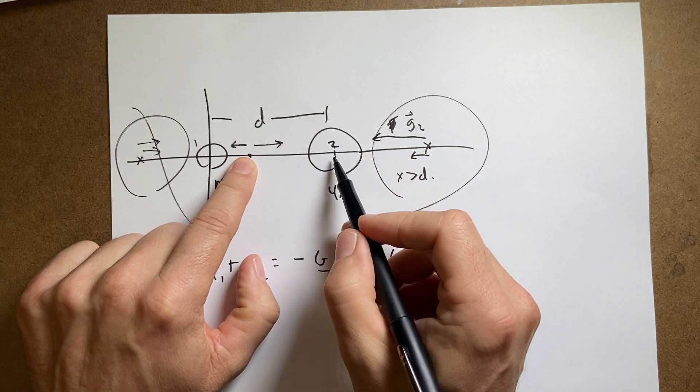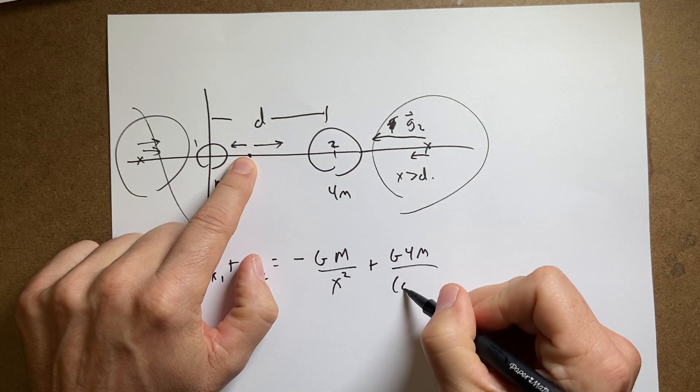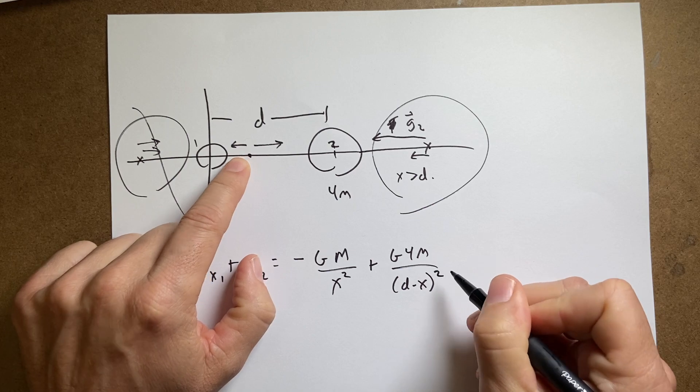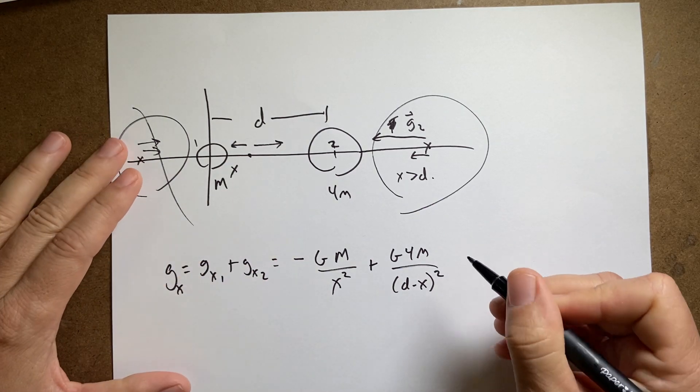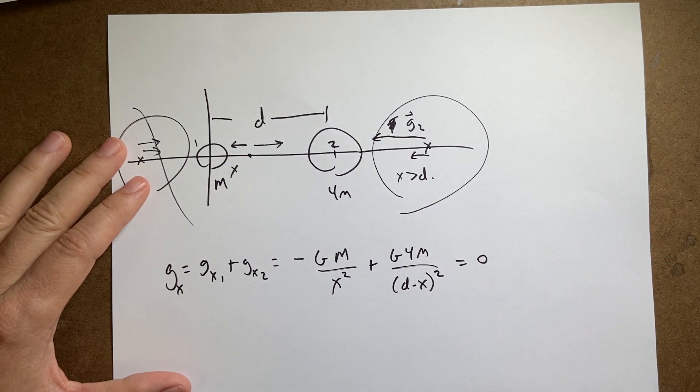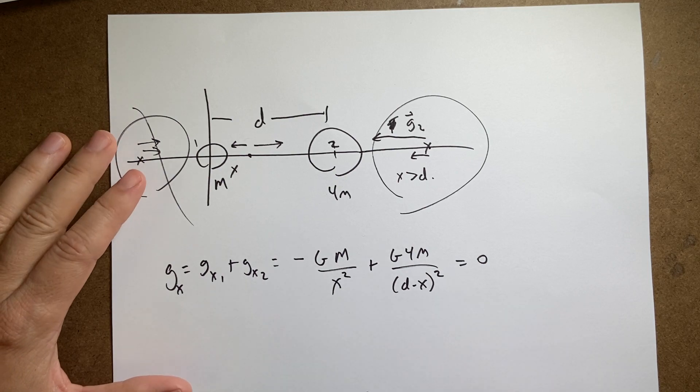So what's this distance? Well, if this is d, this is d minus x. This is d minus x squared. I still have to square that distance. And I want to set this equal to zero. Now I want to solve for x.